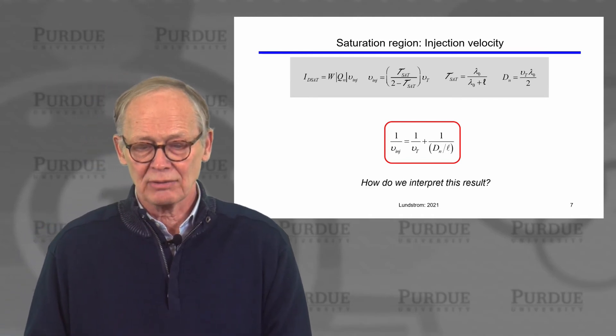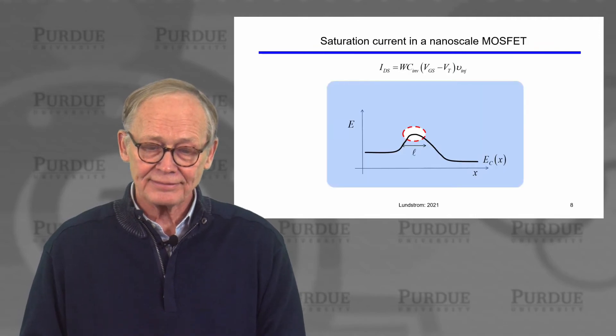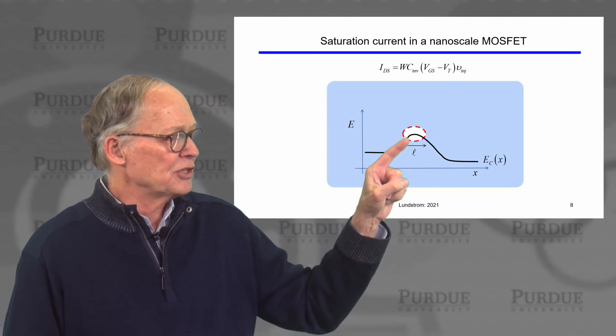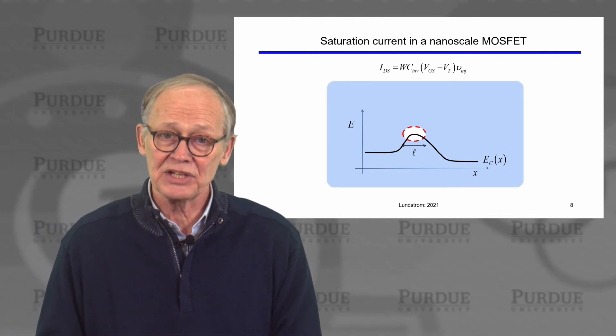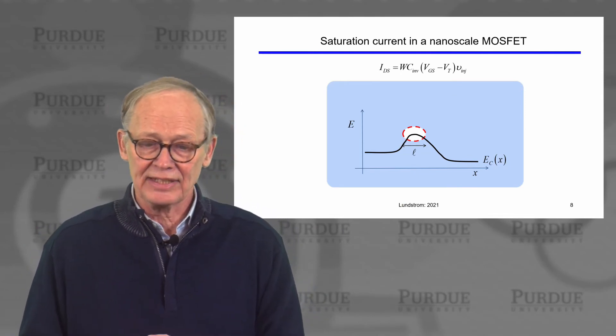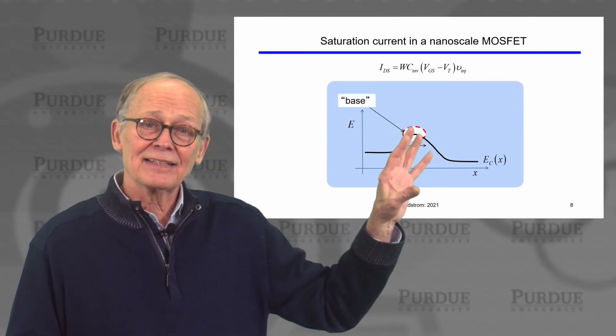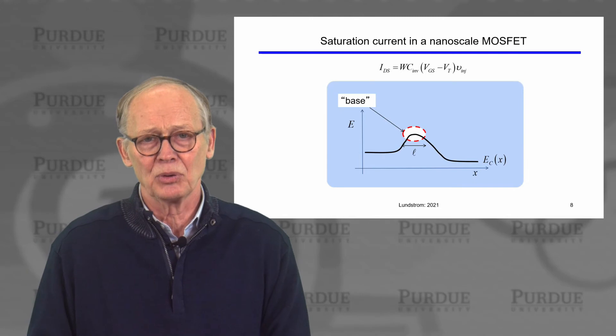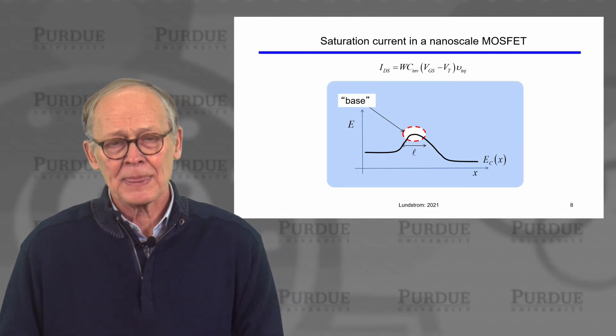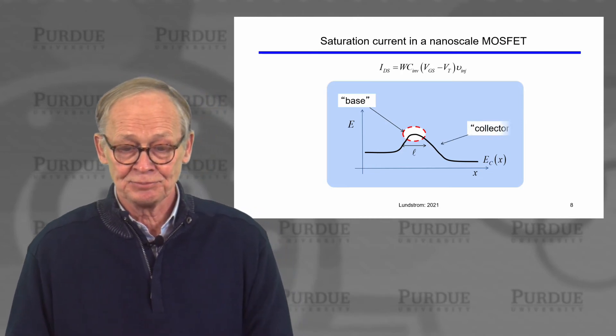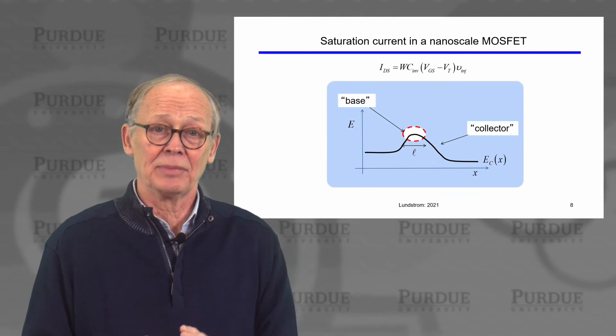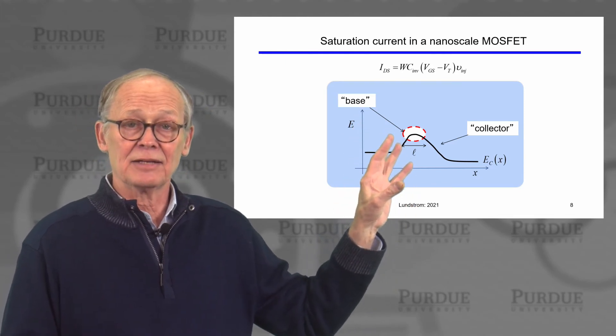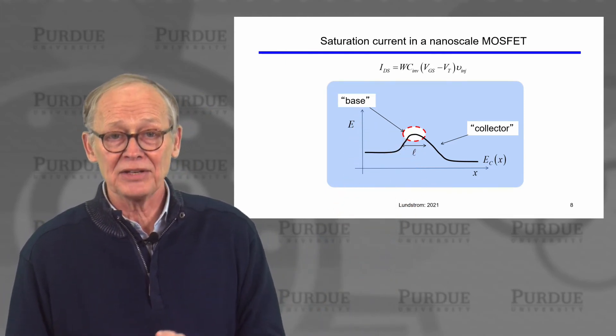How do we make sense out of this result? Let's take a look at our band diagram under high VDS conditions. Remember, there's a bottleneck region that is a length script L long. That's the critical region that limits the current flow under high VDS conditions. This looks something like the base of a bipolar transistor. For those of you who are familiar with bipolar transistors, it looks like the thin base of a bipolar transistor and electrons have to diffuse across the base in order to contribute to the collector current. The drain looks a lot like the collector of a bipolar transistor which collects the current, the electrons that diffuse across the base. And the source looks a lot like the emitter which injects electrons into the base of a bipolar transistor.